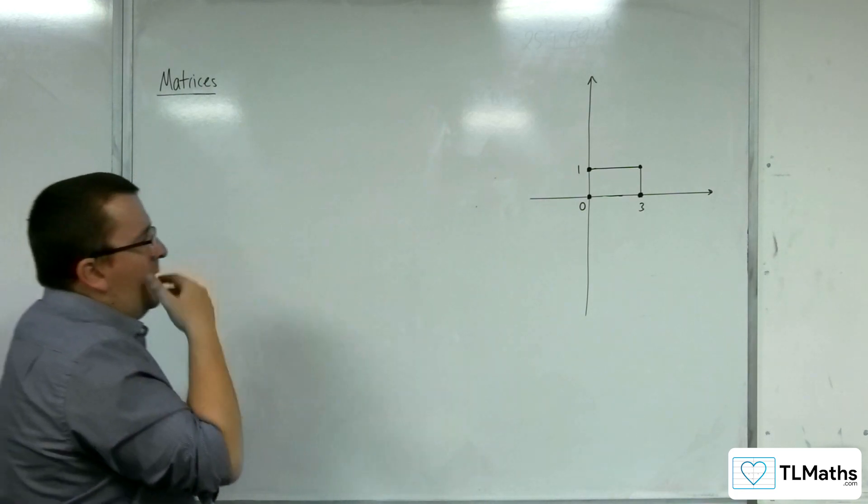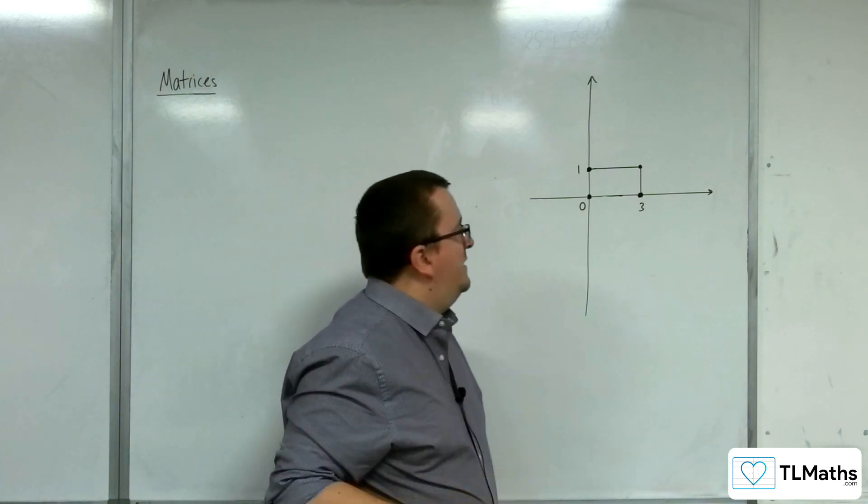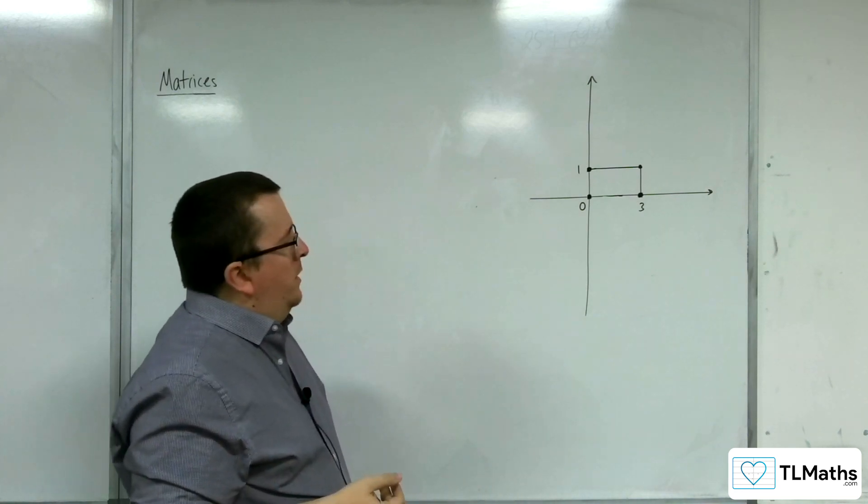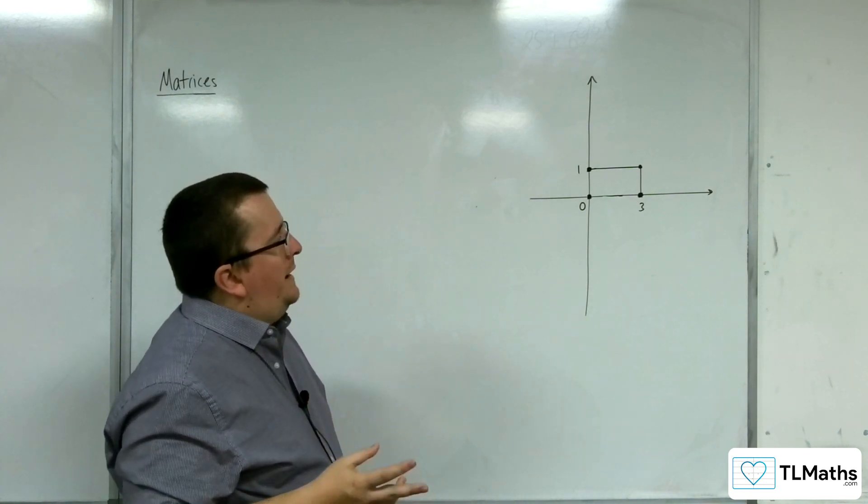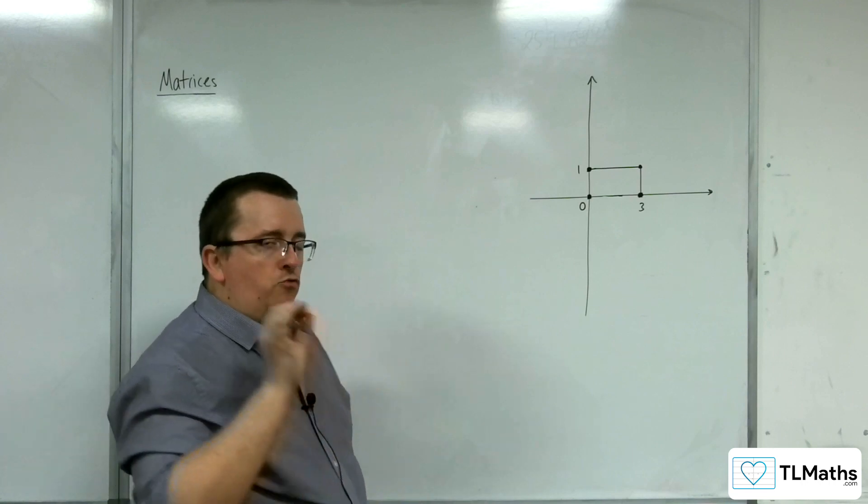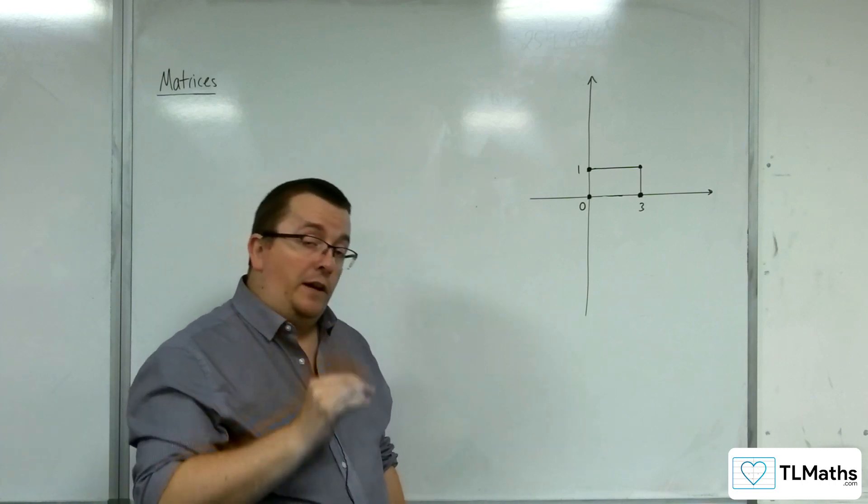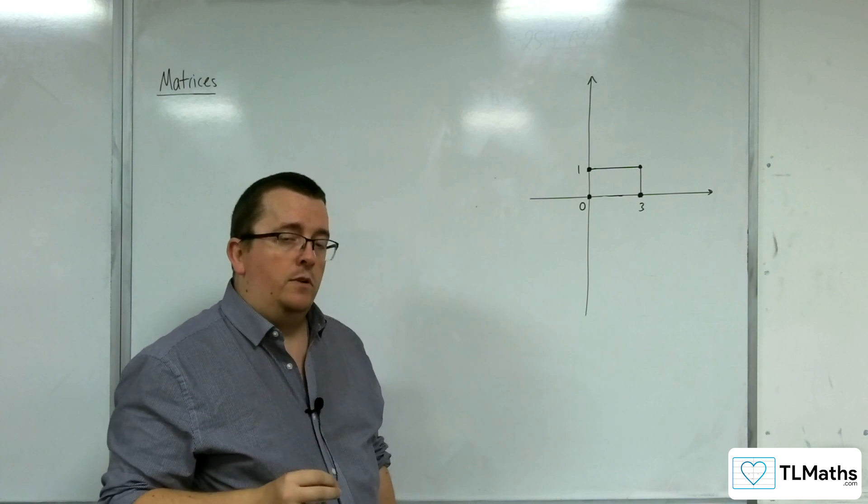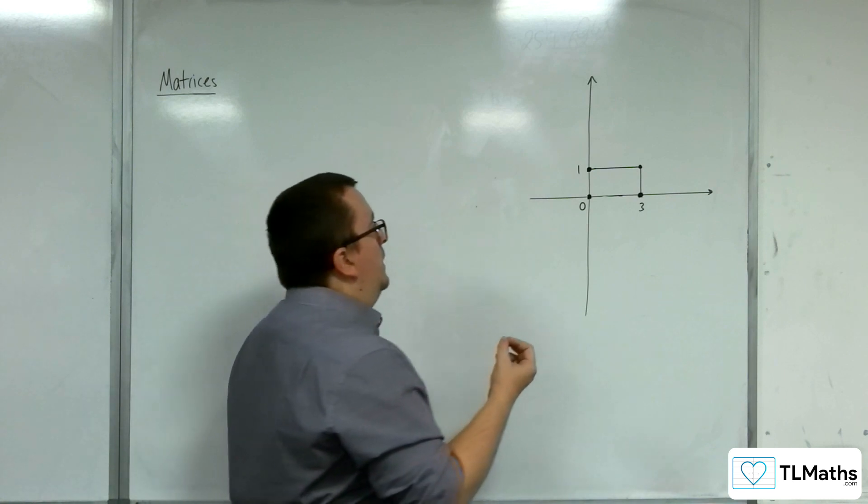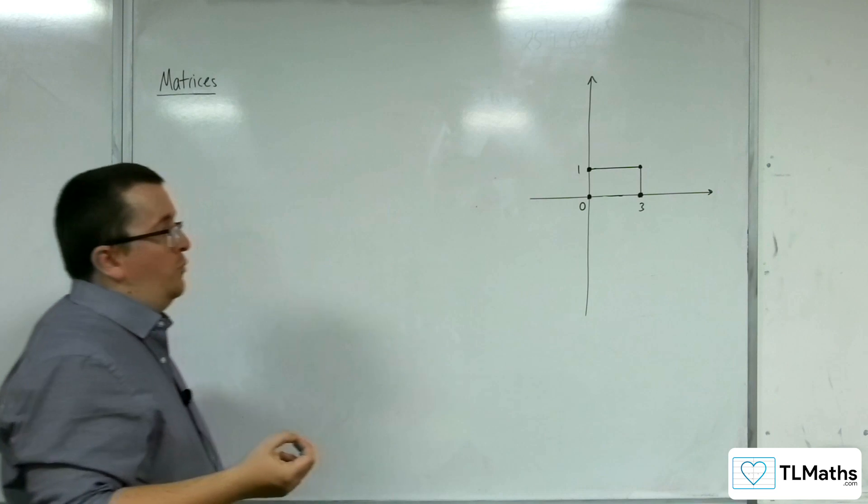So what I've drawn here is a little rectangle and really what I'm going to do is I'm going to represent the vertices of this rectangle using a matrix. So its corners. So I'm going to represent its corners using a matrix.